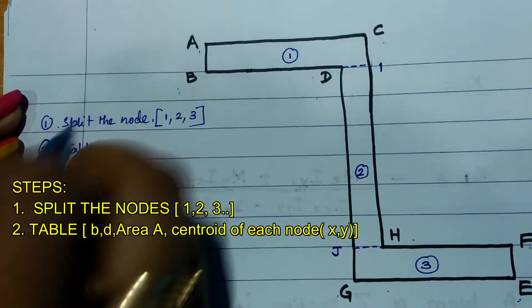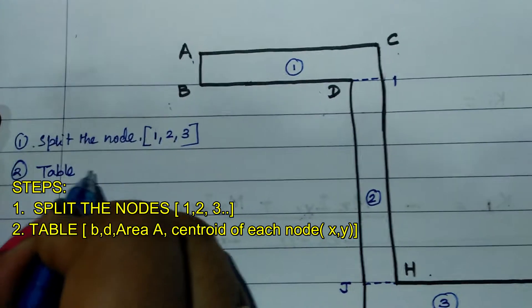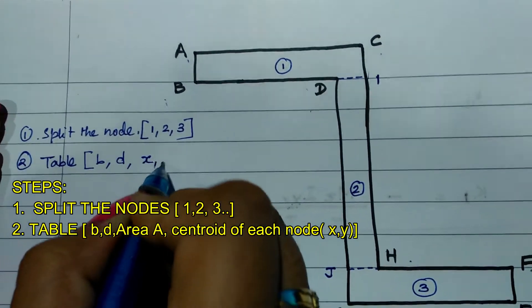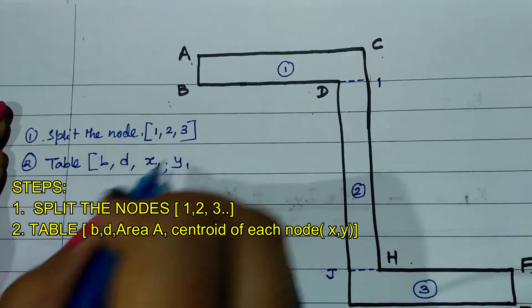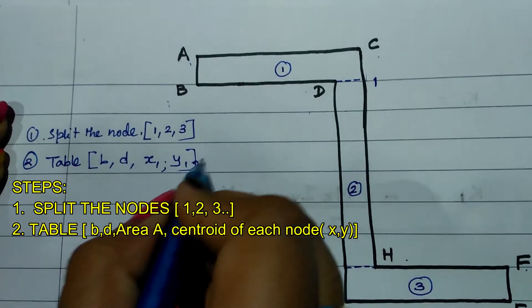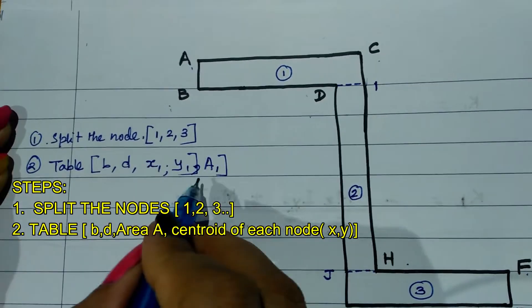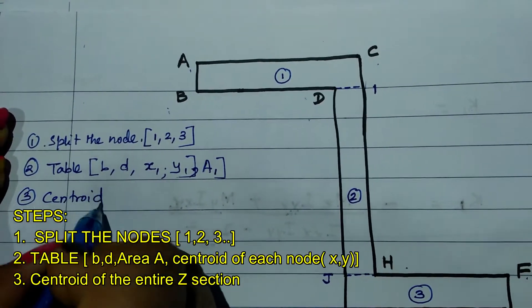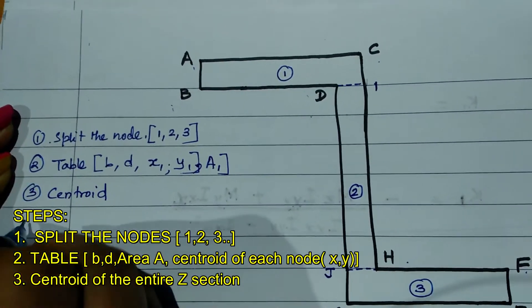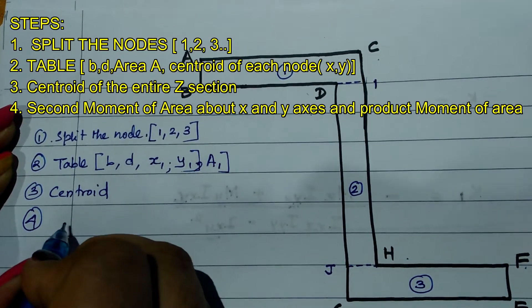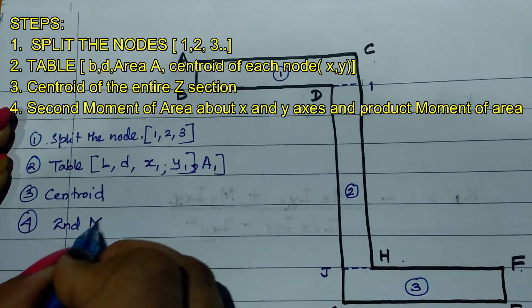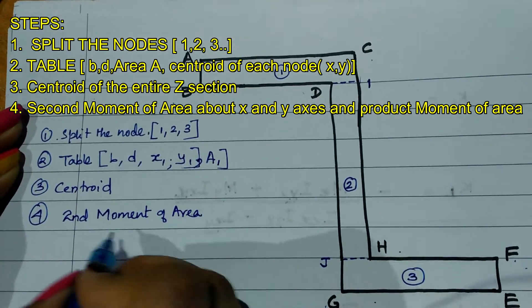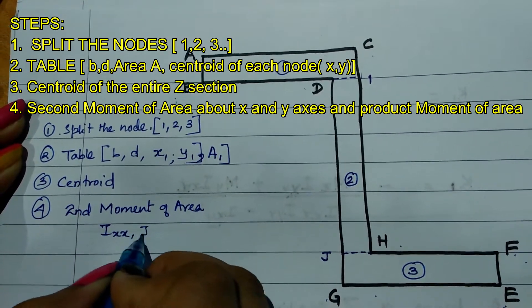The second step is to form a table. For each node, write the breadth (b), depth (d), then find x-bar and y-bar (individual centroid coordinates), and calculate the area of each node. The third step is to find the overall centroid. The fourth step is to find the second moment of area and the product moment of area in the x-y axes.